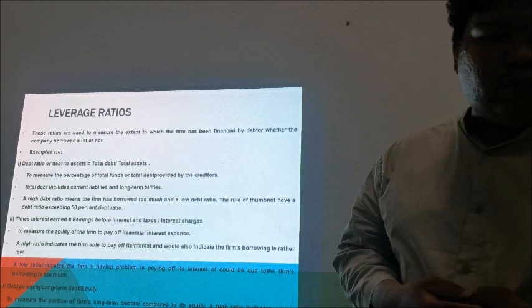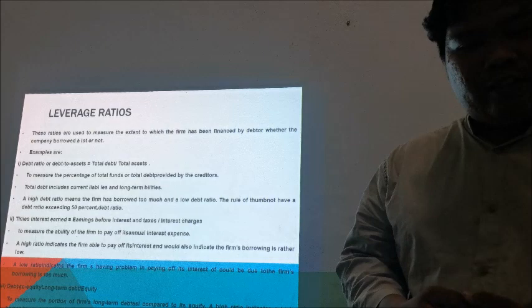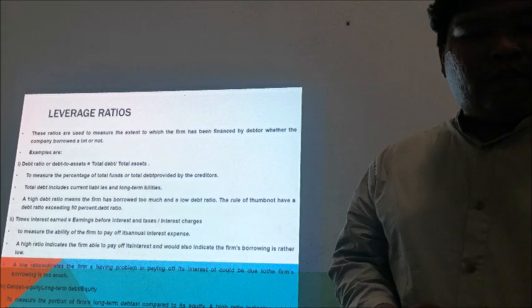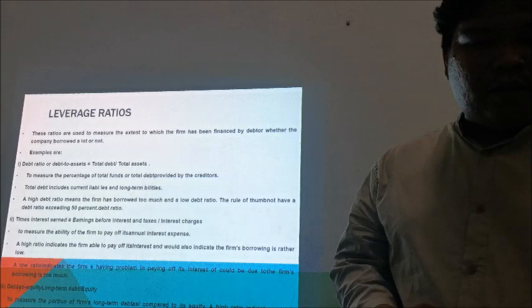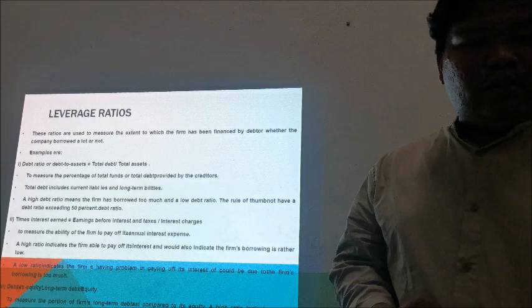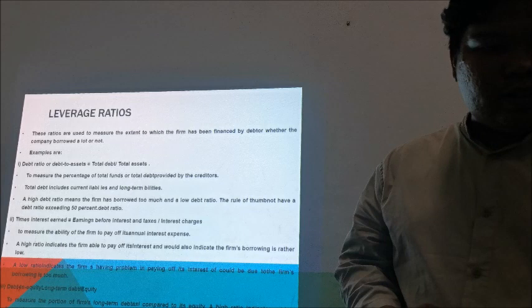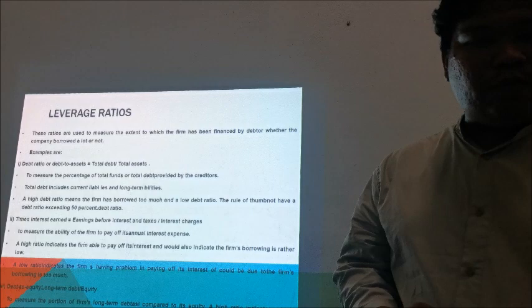For times interest earned, we use the formula: earnings before interest and taxes divided by interest charges. This measures the ability of the firm to pay off its annual interest. A high ratio indicates the firm is able to pay off its interest, while a low ratio indicates the firm is having problems paying interest due to too much debt.